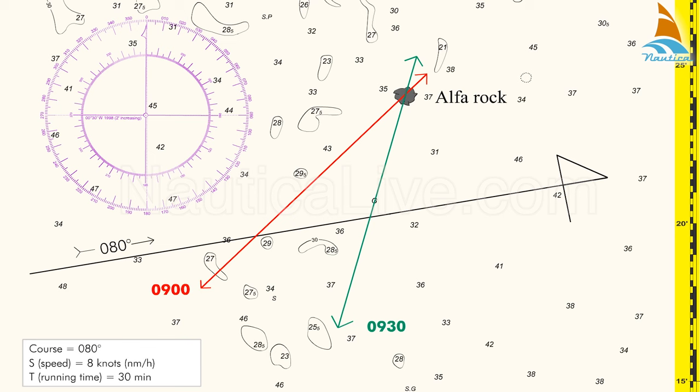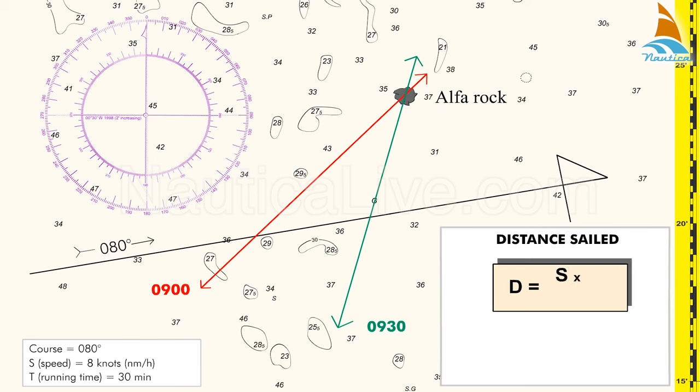Knowing the speed, the next step is to determine the distance that the vessel sailed from 0900 to 0930. For that we use the formula D equals S times T divided by 60, where D is the distance in nautical miles, S is the boat speed, and T is the time in minutes.